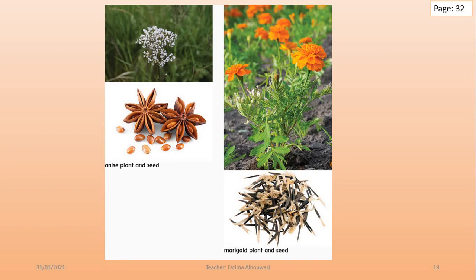There are many different sizes and shapes of seeds. Look at these two different plants and seeds. This is an anise plant and these are anise seeds. This is a marigold plant and these are marigold seeds. The marigold seeds are long and skinny, while the anise seed is small and round and grows in a star-shaped bud. The anise seed looks like it could get stuck on an animal or a person's clothing, while the marigold looks light so it flies away by the wind.